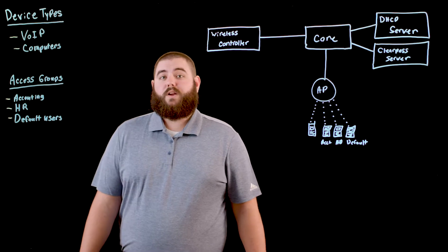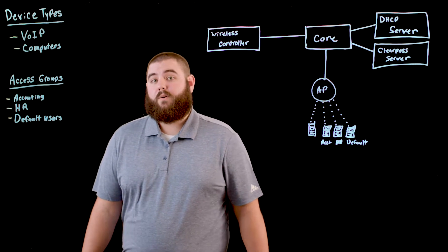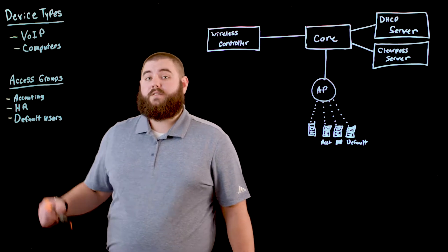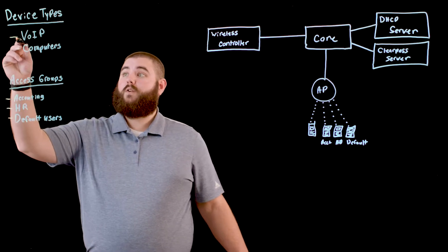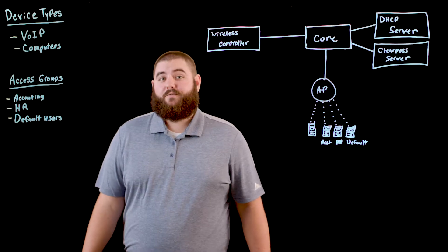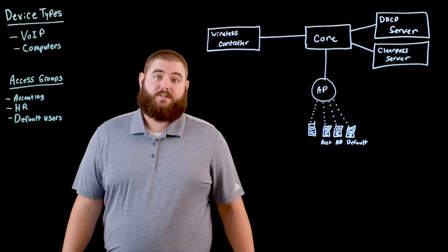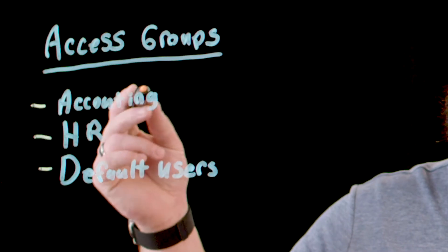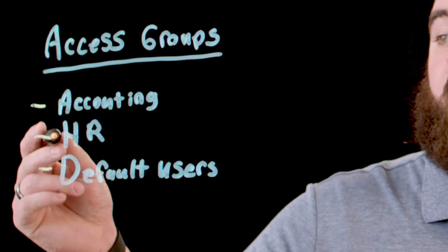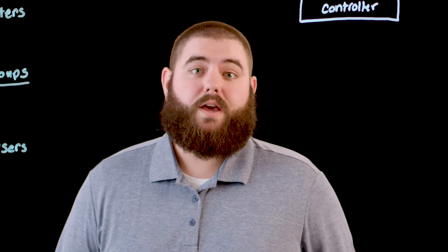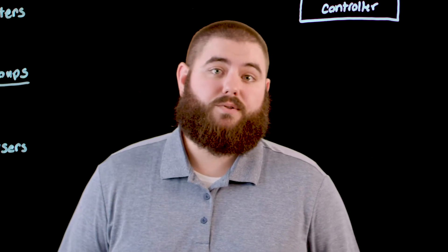In today's modern wireless environment we see a lot of different networks being broadcast for different device types. So you may have a network specifically for voice over IP phones and a separate one for computers. You may have different SSIDs for access control groups, so there may be a group for accounting, a separate SSID for HR, and yet another for default users. This can be a lot of overhead to manage and very confusing for end users on where to connect their devices.